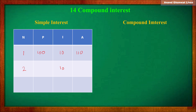The total amount is now 110 plus 10, that is 120. After three years, the interest is again charged on the principal amount of 100, which is 10 rupees, and the amount becomes 120 plus 10, that is 130. Now, after understanding simple interest, let us understand compound interest using this chart.